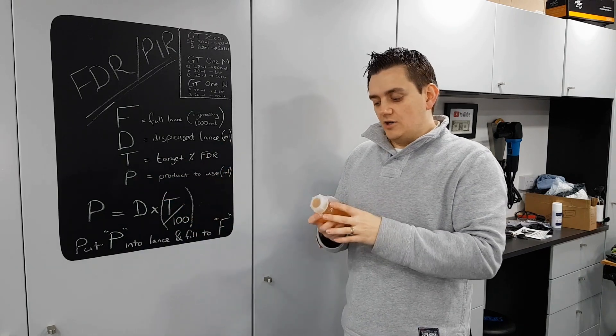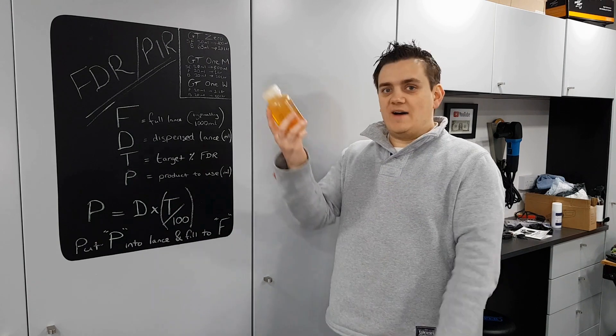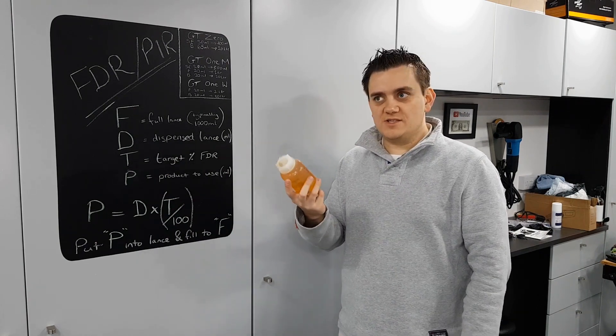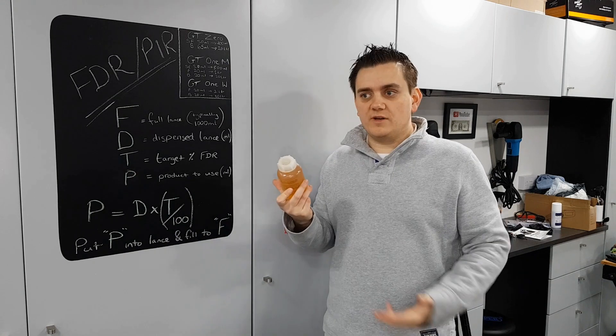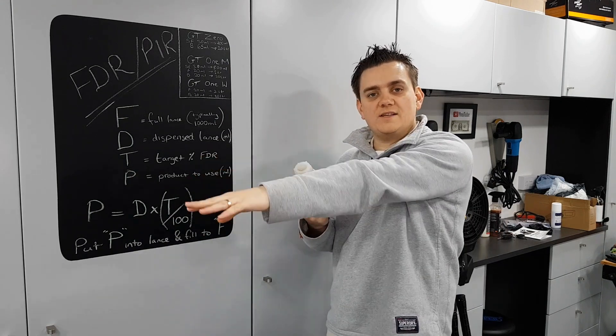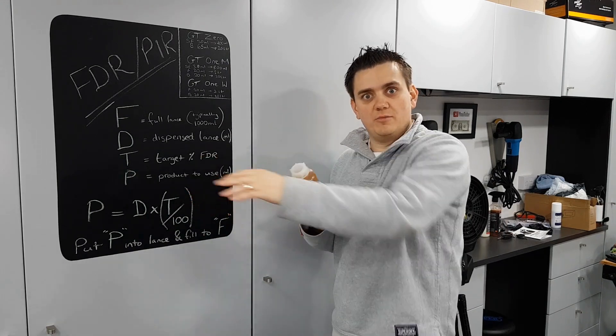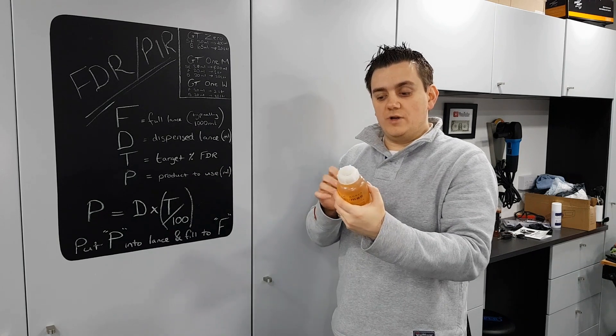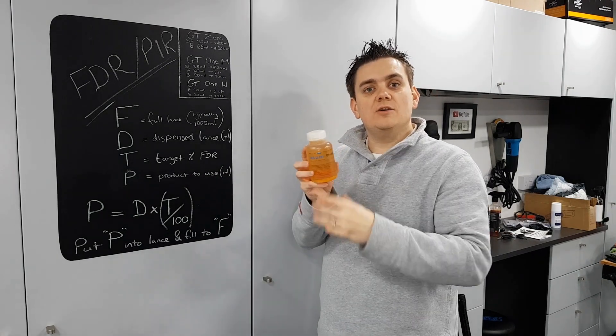You can't just whack five percent of this into your snow foam bottle and expect it to come out at the same rate because it won't. You're adding more water as the jet wash goes through the snow foam lance.